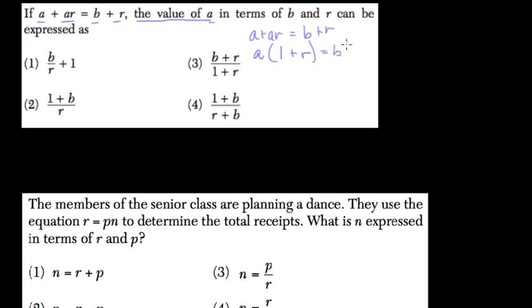itself. So 1 + r is a number - divide both sides by that number so you can isolate a, and this cancels out. And a equals (b + r)/(1 + r), which is choice number three.